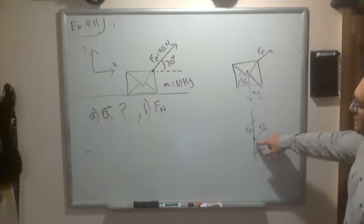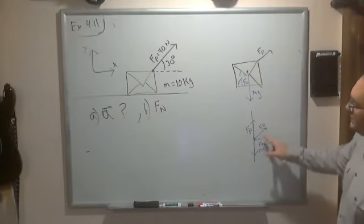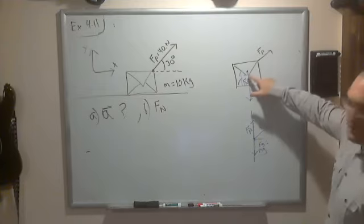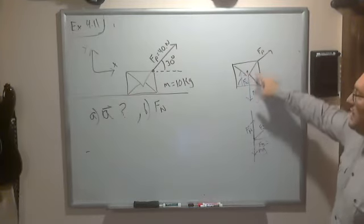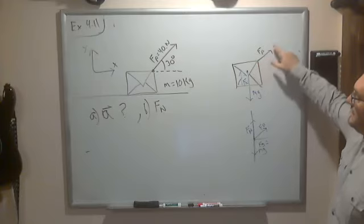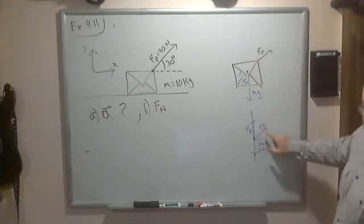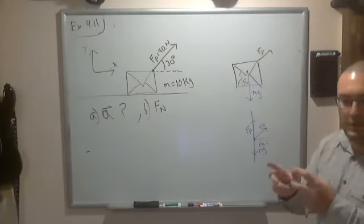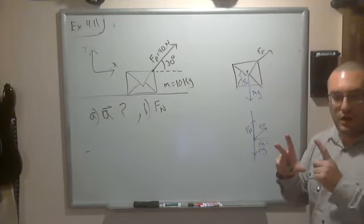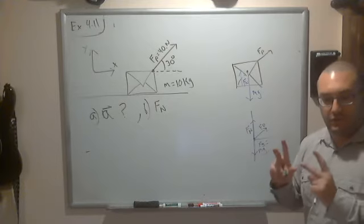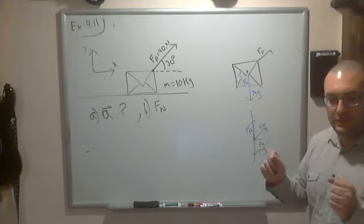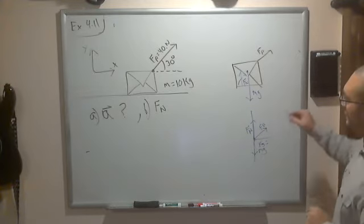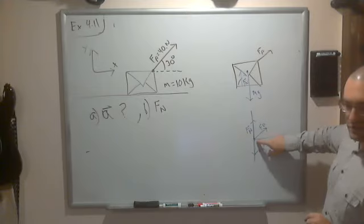Now let's redraw this as a free body diagram. We just say that we can move these force vectors around — we have Fp, Fn, and Fg. It's much easier to work with this because now we can actually see what forces cancel out with each other and in which directions they're in. These objects are what's called plutonic solids — they're rigid, they don't move, they don't extend, so they're non-deformable. That allows us to write it like this.